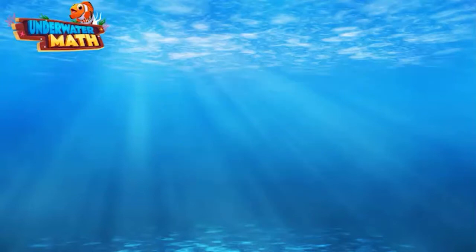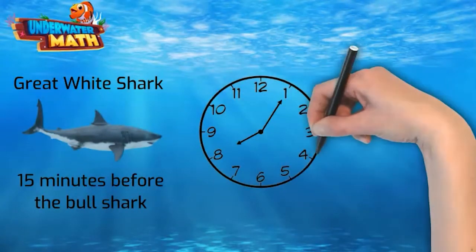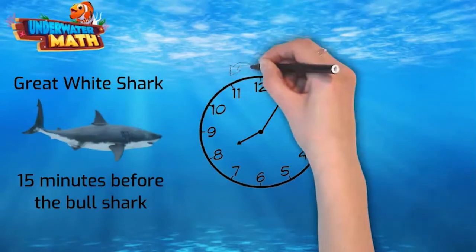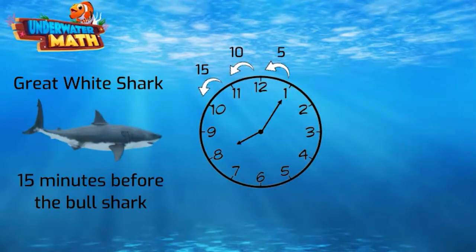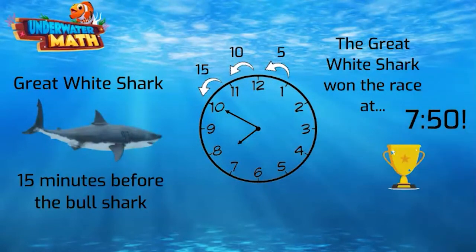We know the great white shark finished 15 minutes before the bull shark. So we can jump 15 minutes backwards on the clock. Now the clock reads 7:50. So we've done it. The great white shark won the race at 7:50.